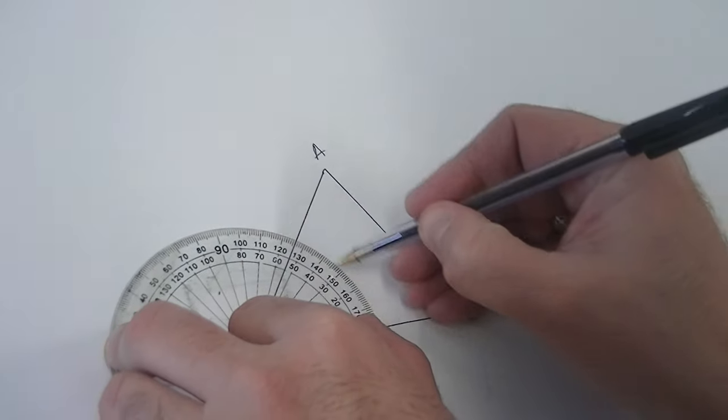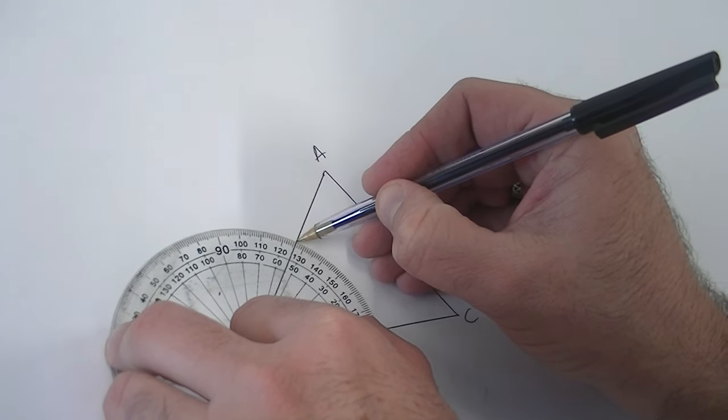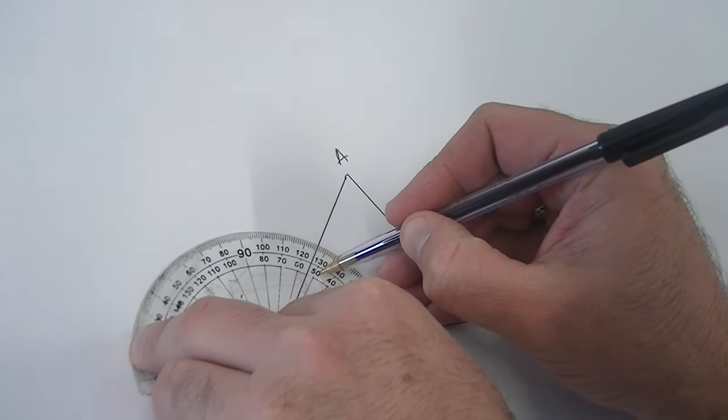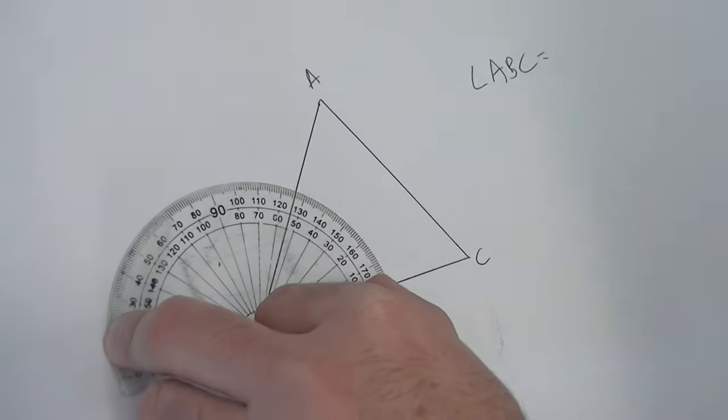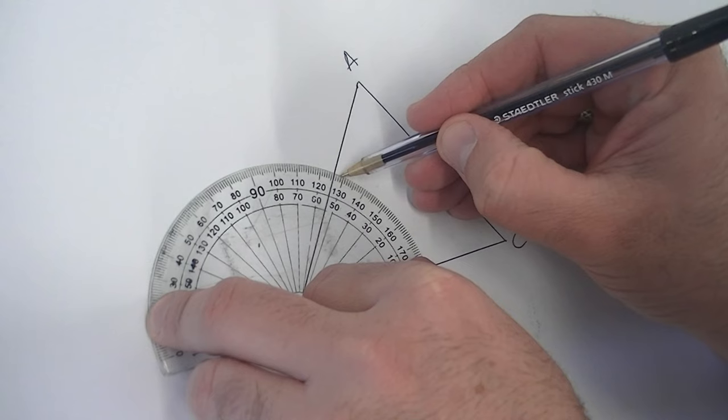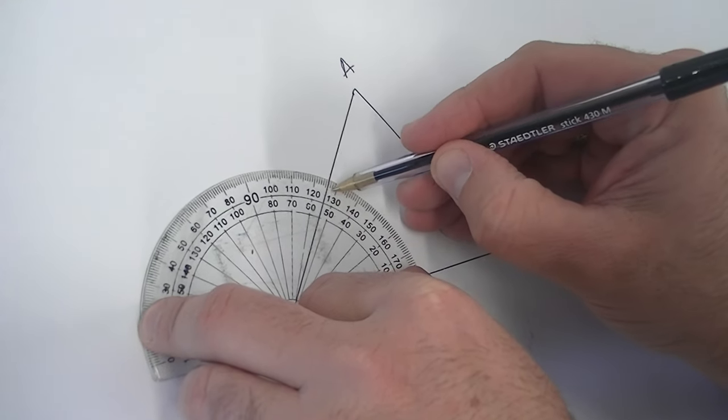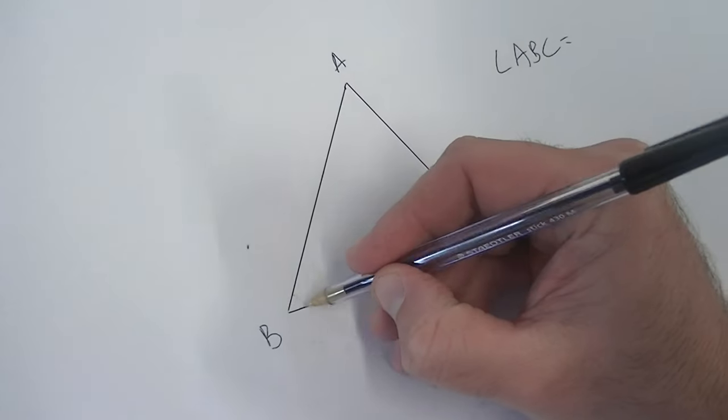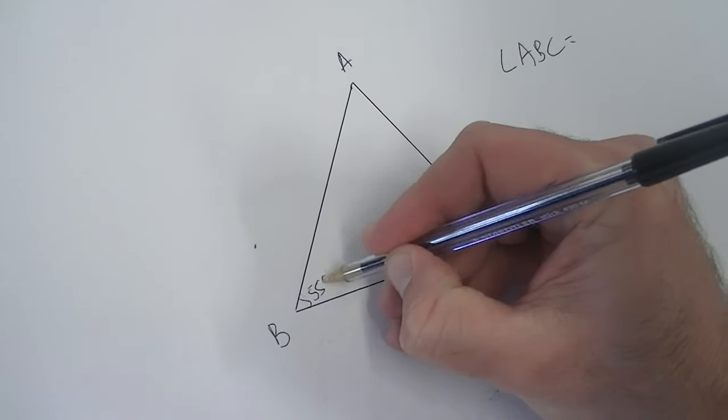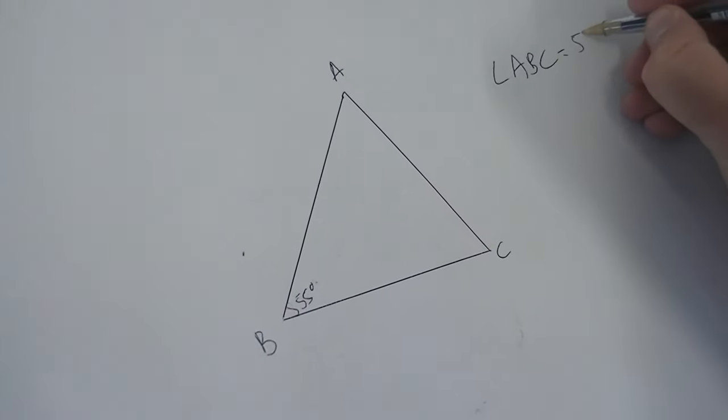So I'm measuring where it intersects. Now because I know that this is an acute angle, it's less than 90 degrees, which I just know, then I know that it can't be 126, it's got to be 55. So I read it off there, that is 55 degrees, put it up here.